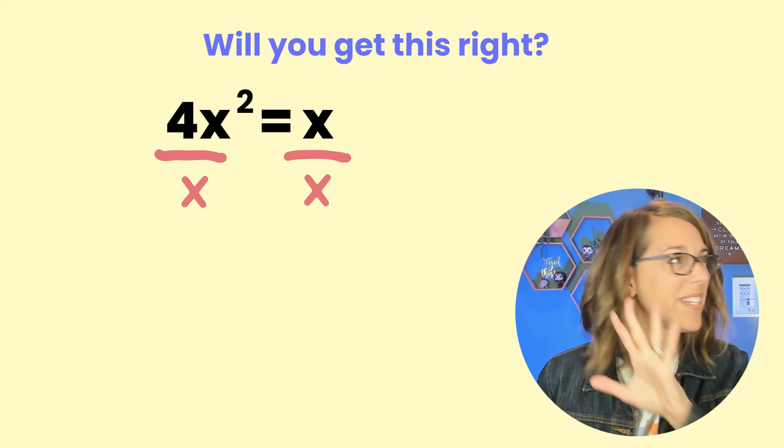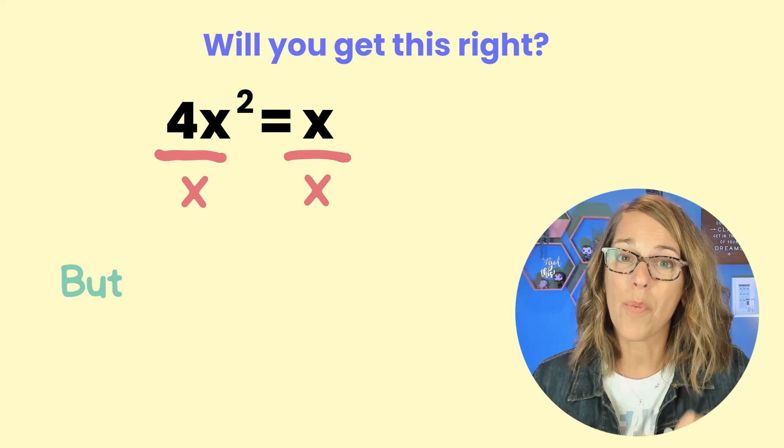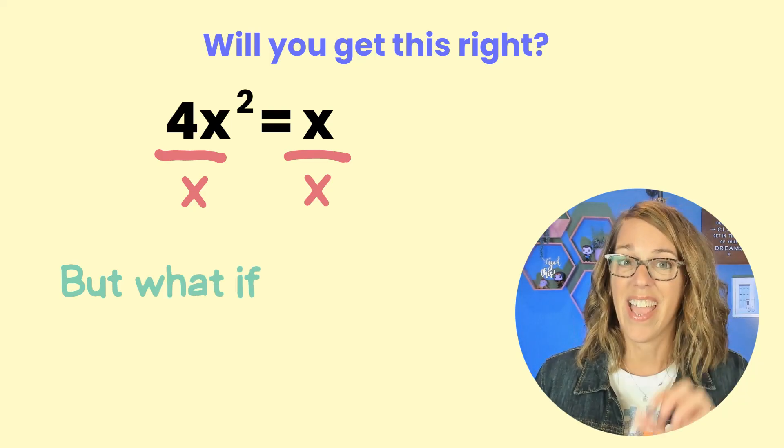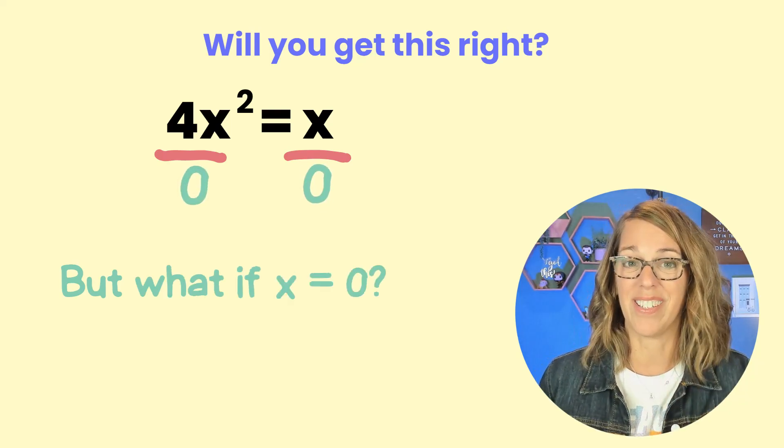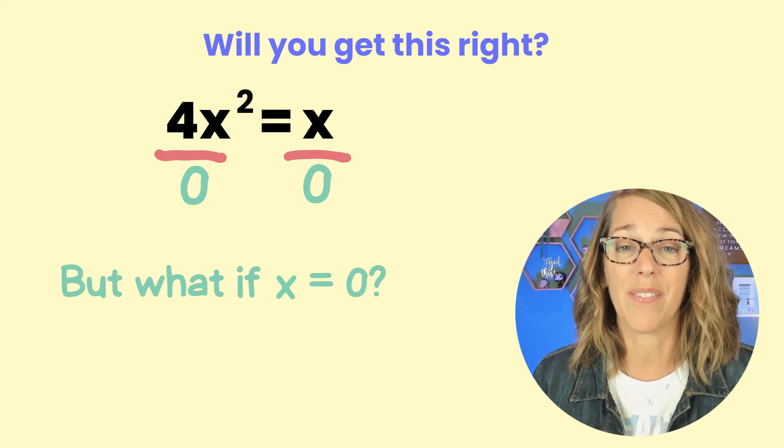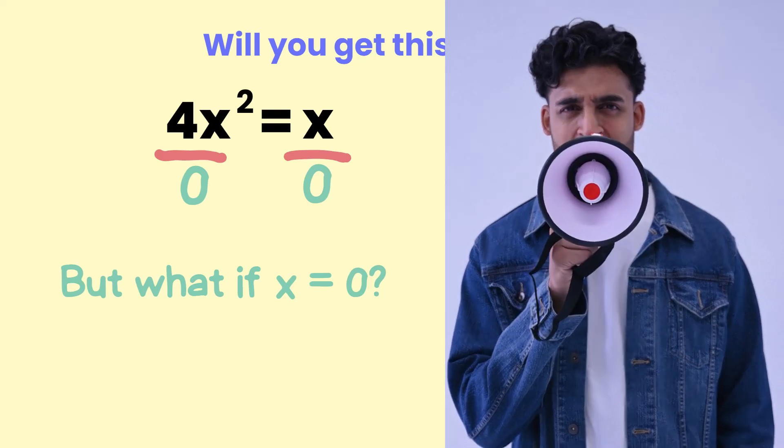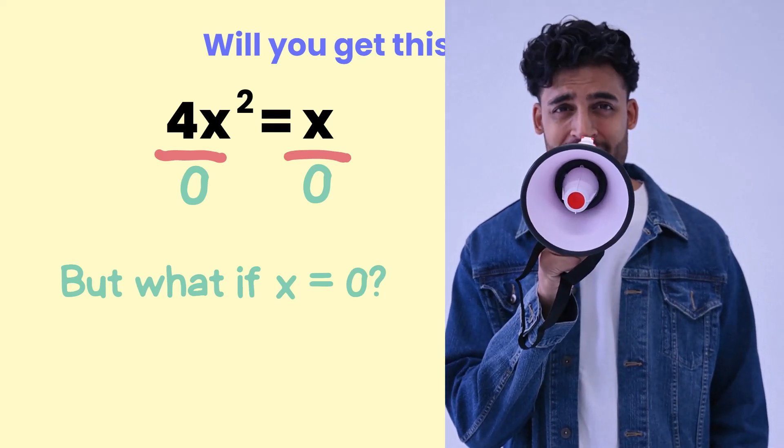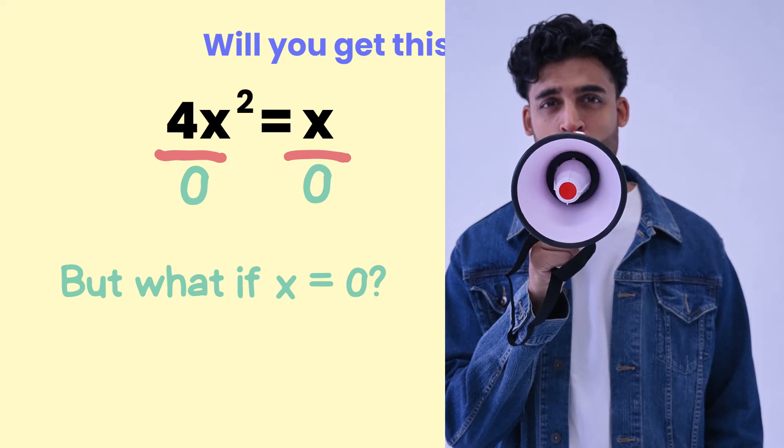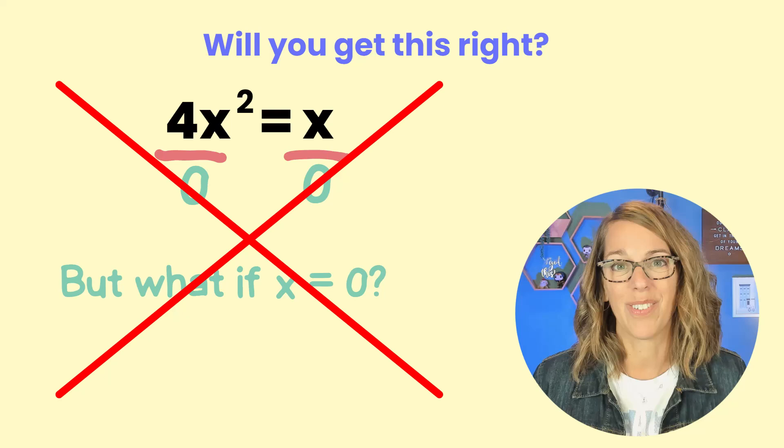Here we divided by a variable and we did not know what the value was. But what if x was equal to 0? If that was the case and I said hey at this step let's divide by 0, some huge red flags should go off in your head, right? Because division by 0 is illegal. It's undefined which means that we would not find a solution here.